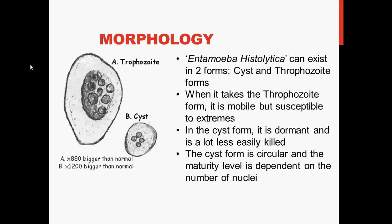Regarding morphology, Entamoeba histolytica can exist in two forms: the cyst form and the trophozoite form. When it takes the trophozoite form, it is mobile but susceptible to extremes. In the cyst form, it is usually dormant, a lot less easily killed, and also immobile. The cyst form is circular and the maturity level is dependent on the number of nuclei.